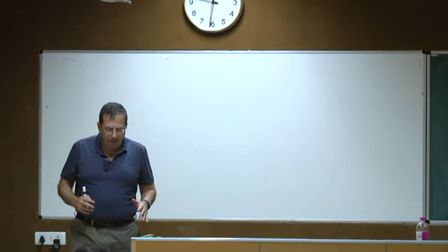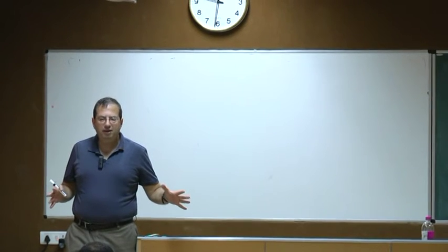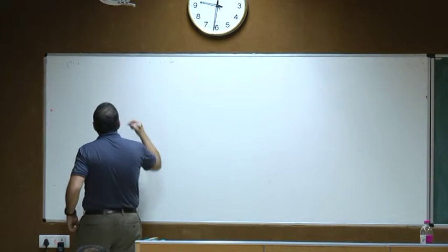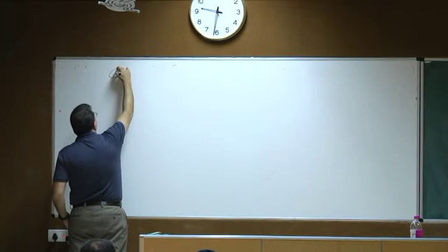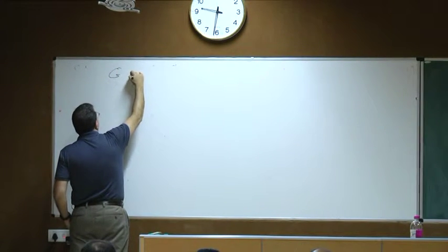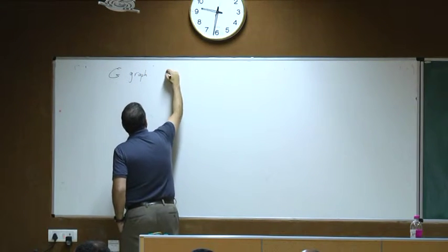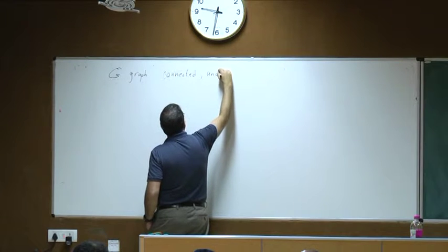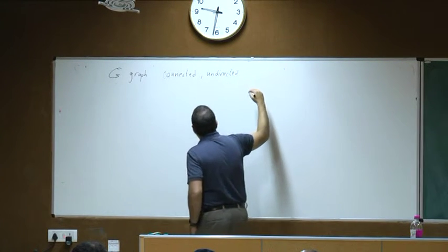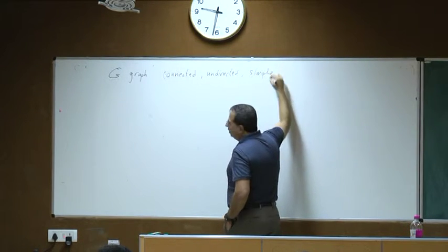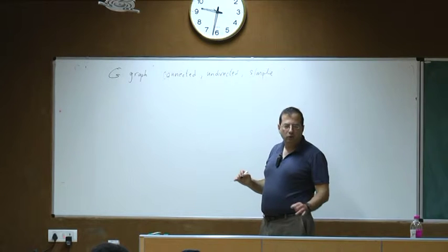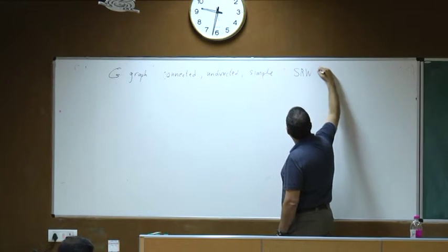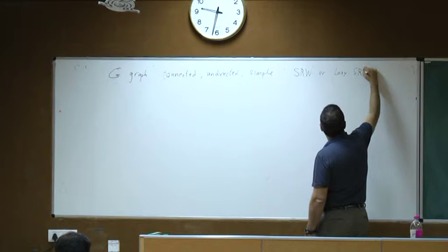We'd like to combine some of the elements we've seen on escape rates on the one hand and mixing on the other hand. Our setting will have a graph G that is connected and undirected, and it will be a simple graph, meaning no multiple edges and no self-loops. We will consider the Markov chain to be simple random walk or lazy simple random walk, both of which work on G.